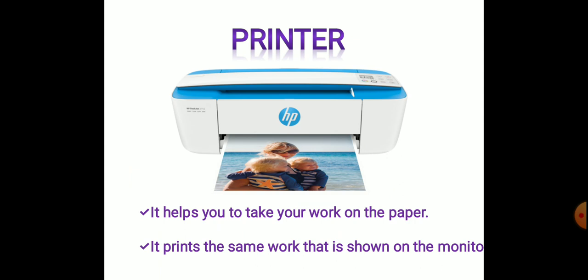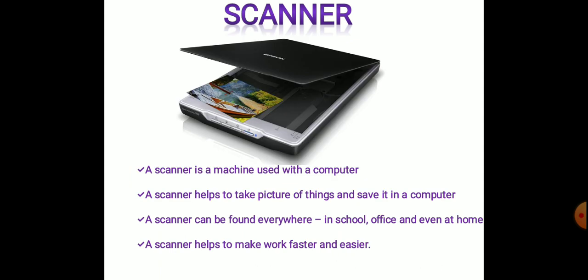Now, the printer. It helps you to take your work onto paper. It prints the same work that is shown on the monitor. The last one is the scanner. A scanner is a machine used with a computer. It helps to take pictures of things and save them in a computer. A scanner can be found everywhere — in school, office, and even at home. A scanner helps to make work faster and easier.